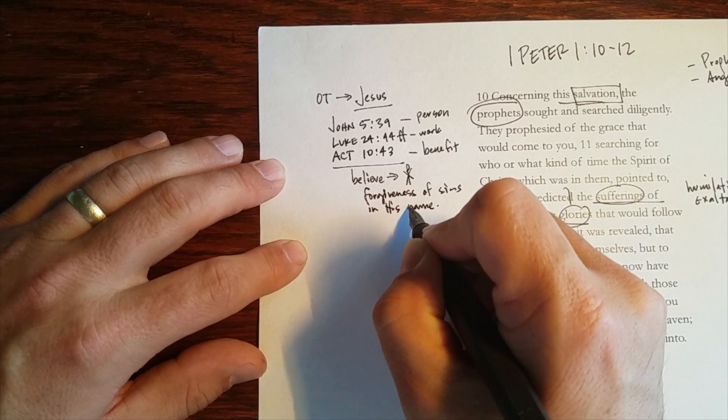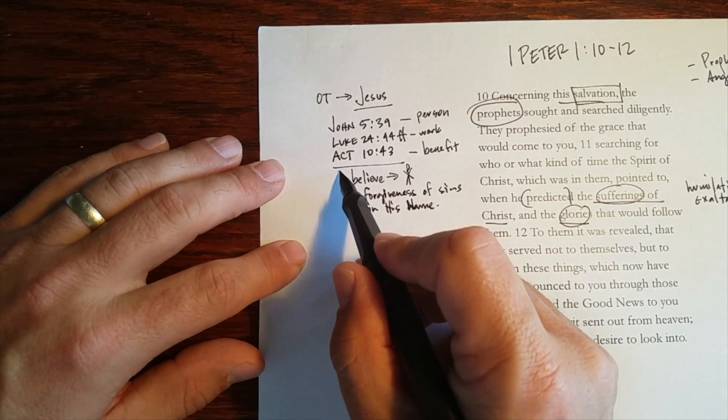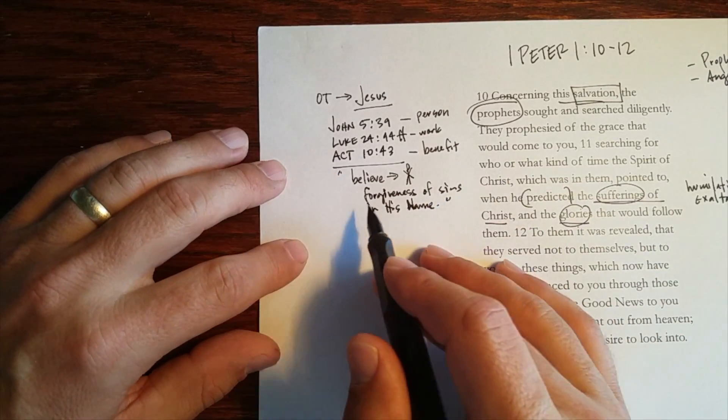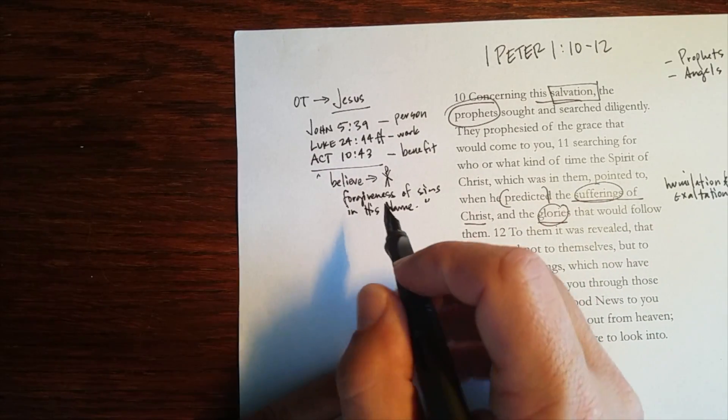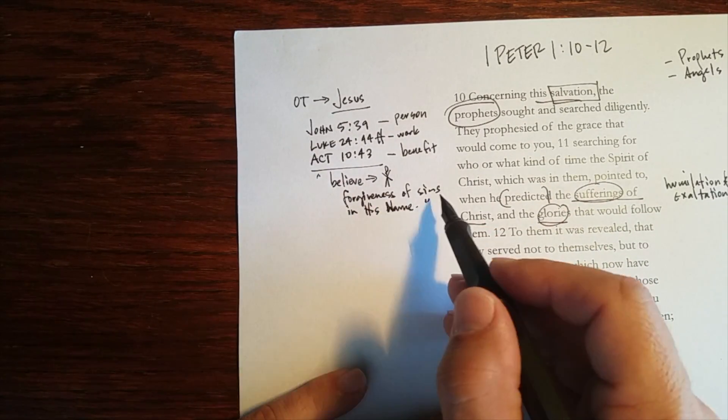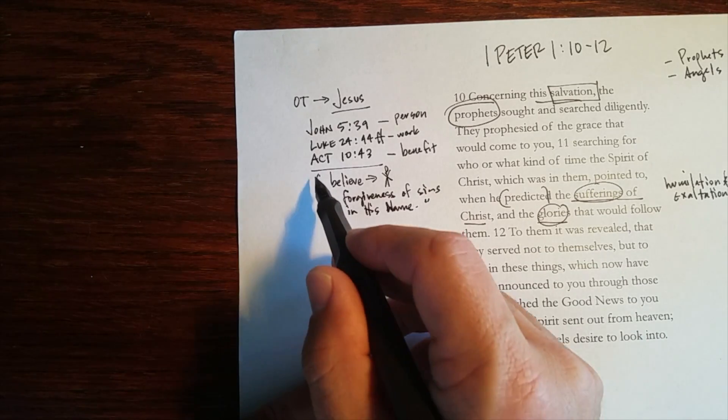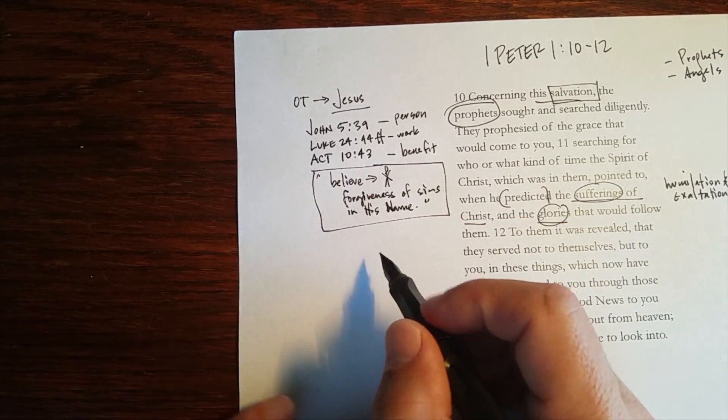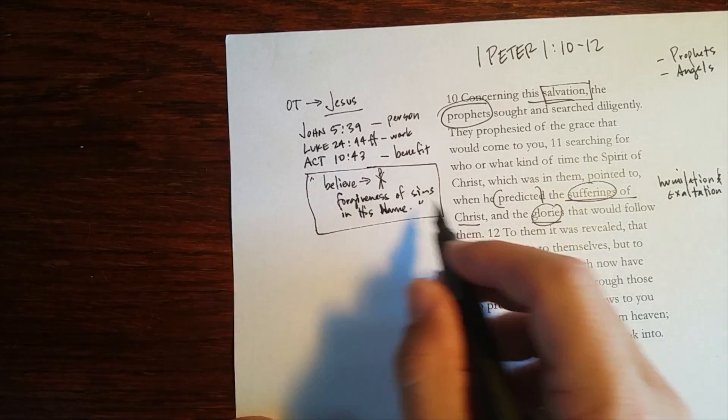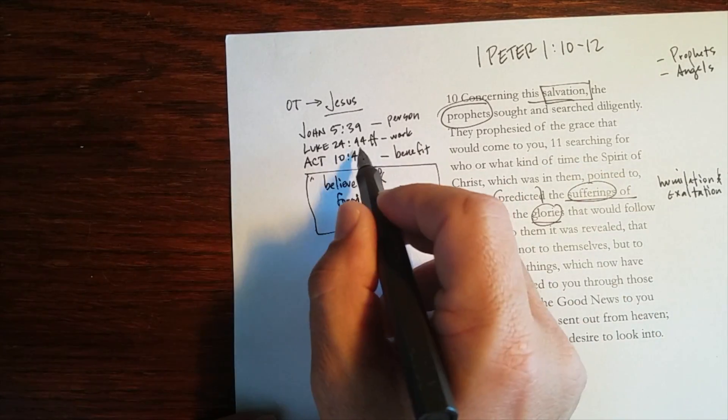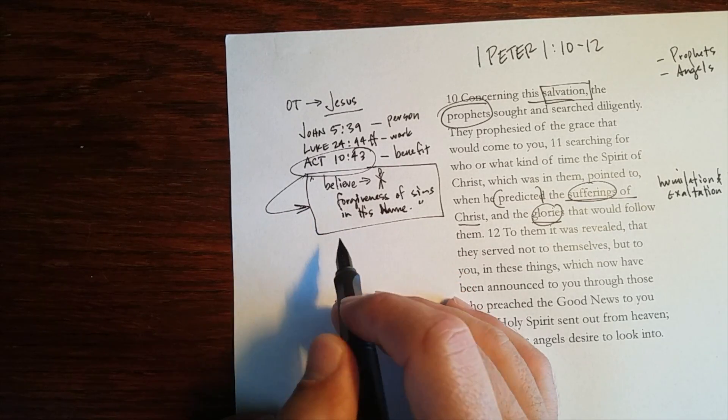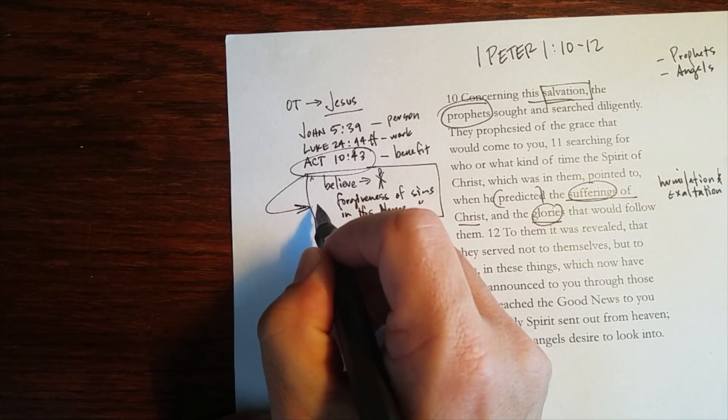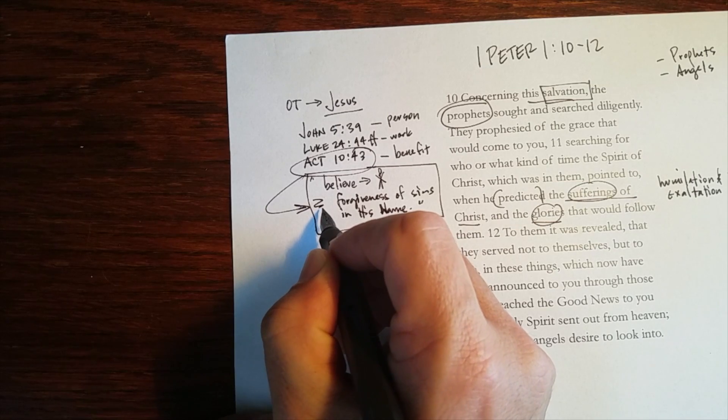If I were to say to you, here's the content of a letter, of a preaching, of a sermon, or of some text of the scripture, that if you believe in Christ you receive forgiveness of sins through his name, what book of the Bible would I be talking about? And you would probably guess, I would too, that this is a particular New Testament book. But Peter, in Acts chapter 10, says that this is what all of the prophets preached.